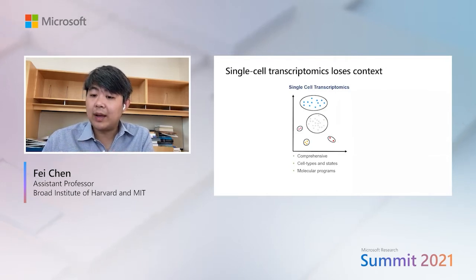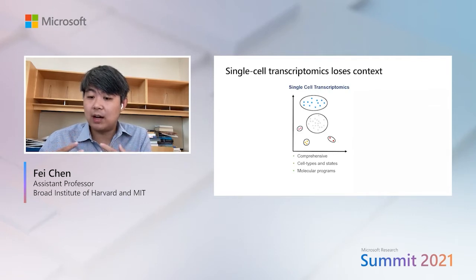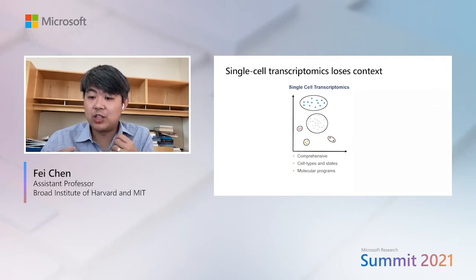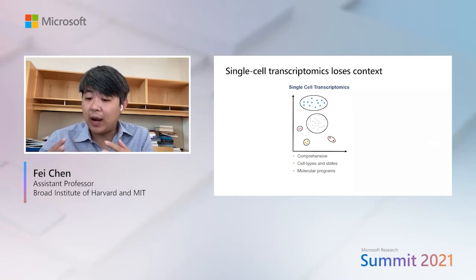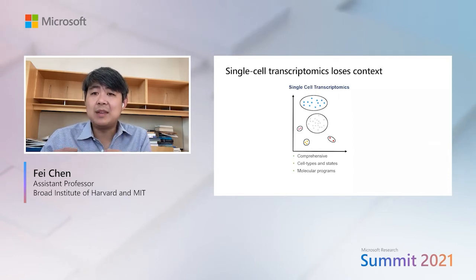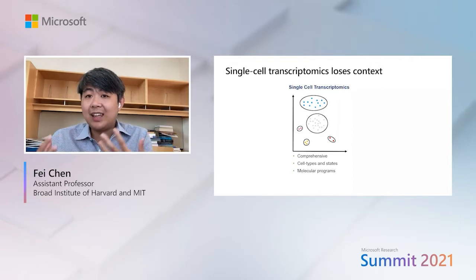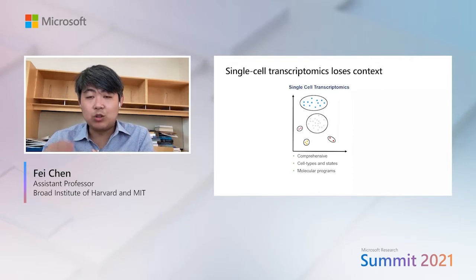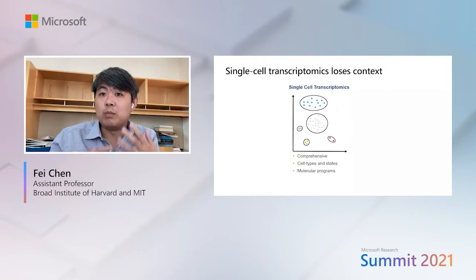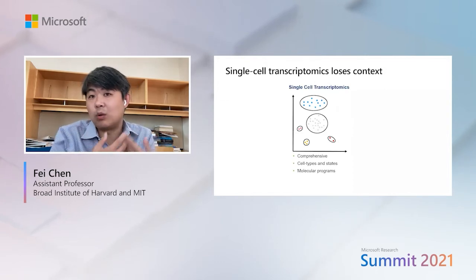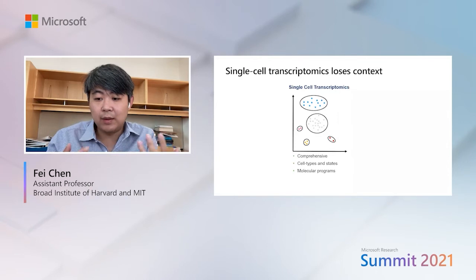In single-cell transcriptomics, you can break down a tissue into its constituent cells and sample the transcriptome of each cell. This is powerful because it's comprehensive — it lets you look at the cell types and states, as well as the molecular programs within those cells. You can get a sense of what molecules are driving dysfunction and disease, or what programs are acting in development.